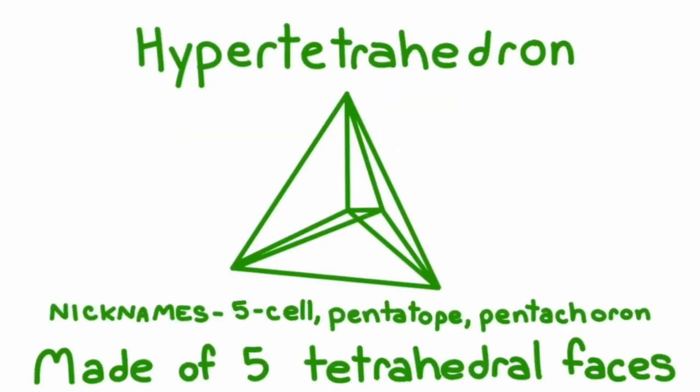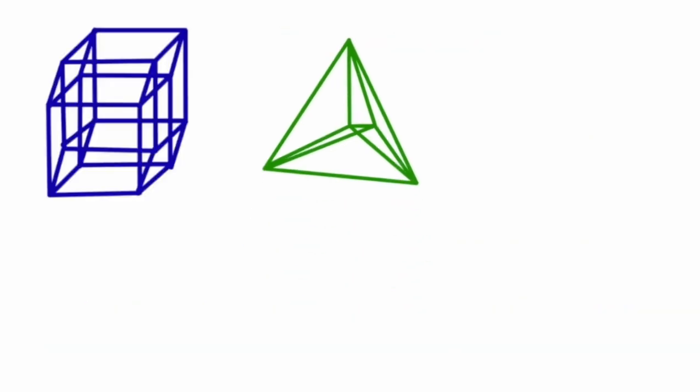Next, we are going to use the tetrahedron. We have to fit three around a shared edge to create a corner. Once we do that multiple times, we create the hyper-tetrahedron. The hyper-tetrahedron is made of five tetrahedral faces.